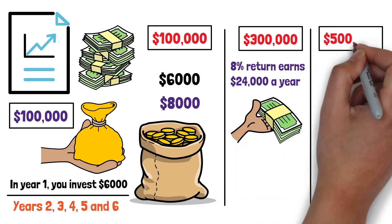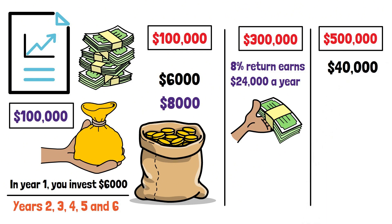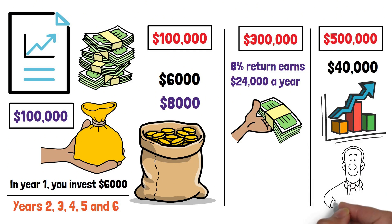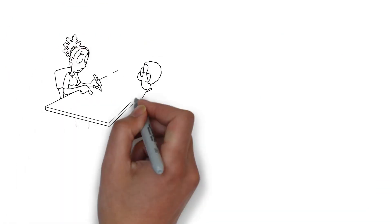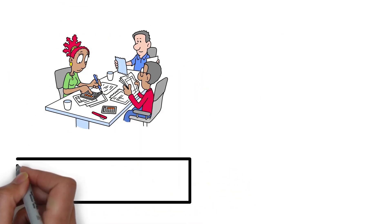At $500,000, it's $40,000. Compounding is now doing three or four times more than you. And from this point on, it becomes very difficult not to become wealthy as long as you stay invested. This is the moment the wealth game becomes unfair in your favor.